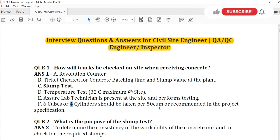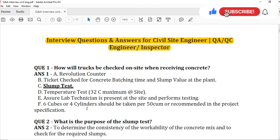Generally, you can take 4 cylinders or 6 cubes per 50 cubic meters of concrete. Now the second question: What is the purpose of slump test? To check the workability of concrete, we perform slump test. Just to check the workability of concrete.